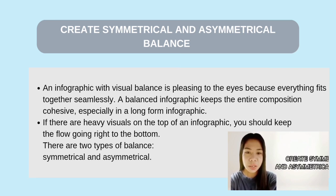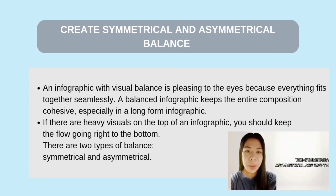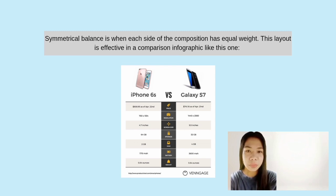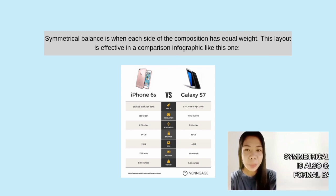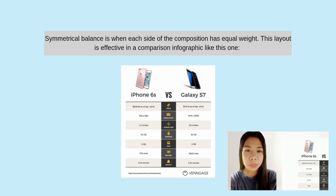Create symmetrical and asymmetrical balance. Symmetrical and asymmetrical are two types of balance. Symmetrical balance is when each side of a composition is of equal weight — elements used are identical or almost identical on both sides of the picture. Symmetrical balance is also called formal balance. In creating infographics, visual balance gives interest to the viewer. A balanced infographic keeps the entire composition cohesive. For example, the iPhone 6s versus Galaxy comparison shows the difference clearly.